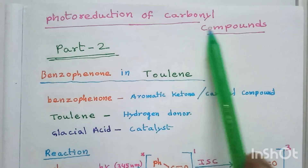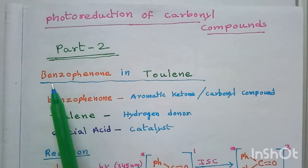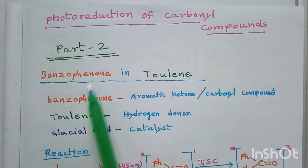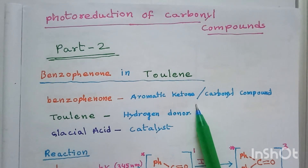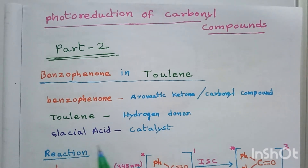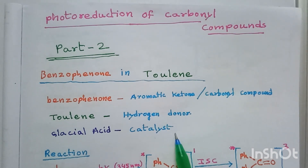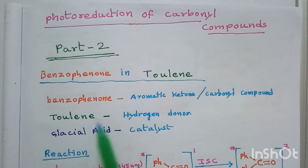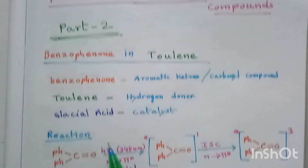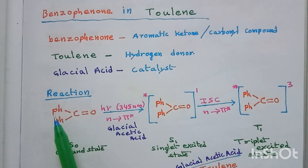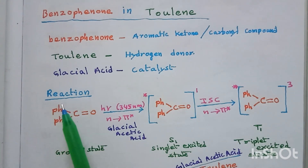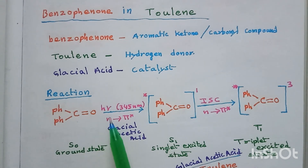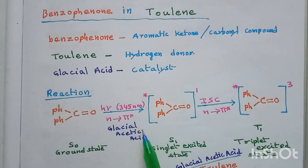Today we are going to learn about photoreduction of benzophenone in toluene — this is the Part 2 lecture of photoreduction of carbonyl compounds. As you know, benzophenone is a carbonyl compound, also called an aromatic ketone. Toluene is the hydrogen donor and glacial acetic acid is the catalyst. Let us see the reaction: benzophenone in ground state is Ph₂C=O.